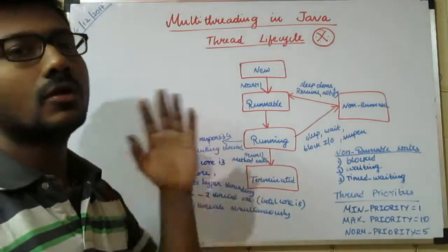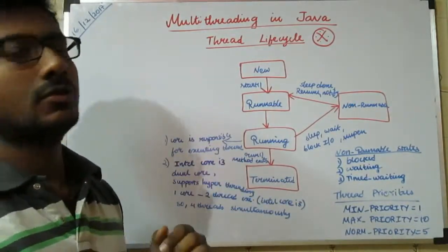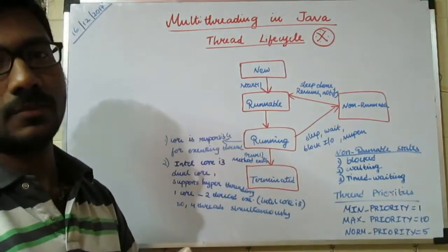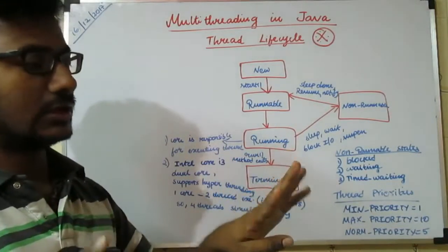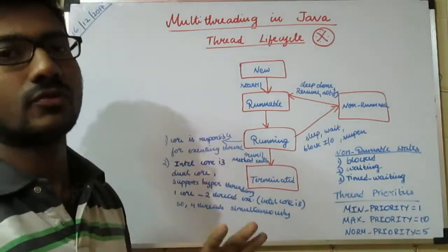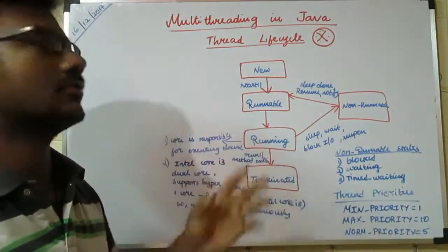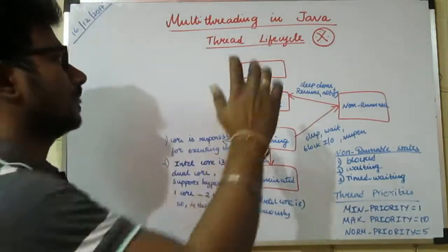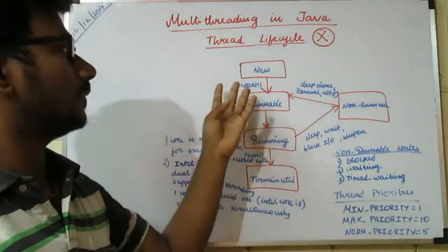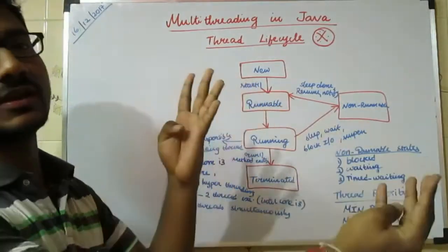If you have a bike, you can use a bike. This is the scenario, we will relate to this example. New is a thread to create. New is a family of four members — four threads created.